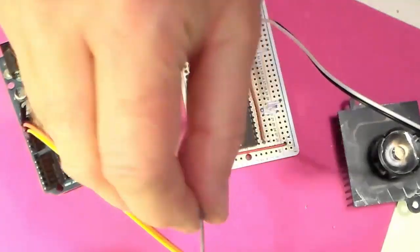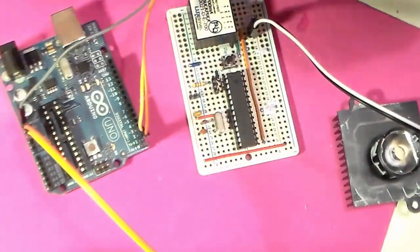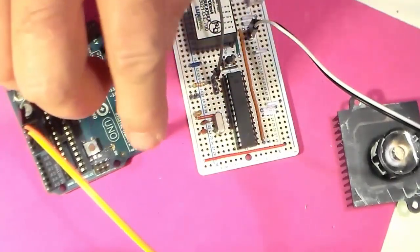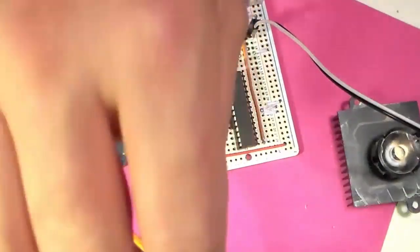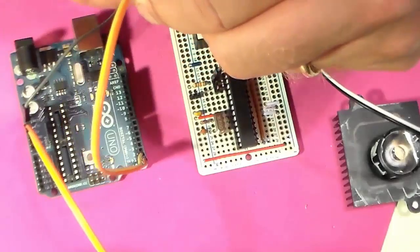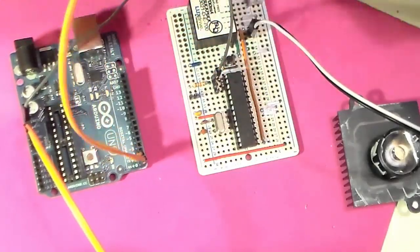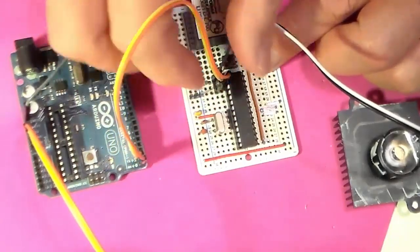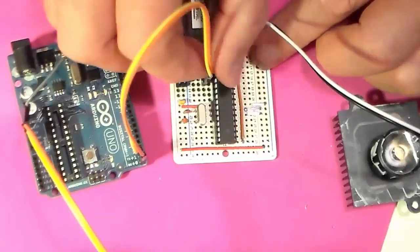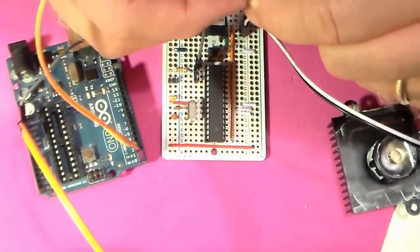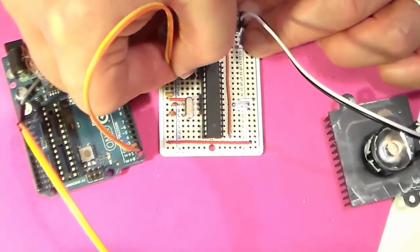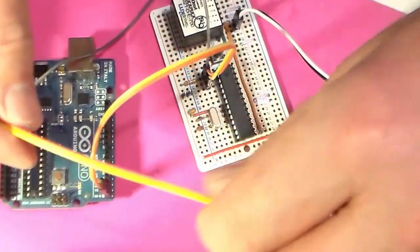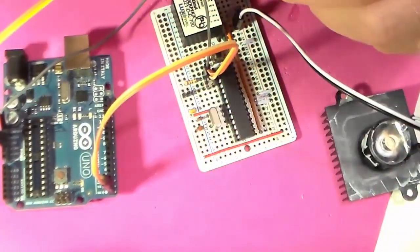The way this works is I run a lead from reset over here on the Arduino to pin one on my ATmega chip. Then from here where we have the RX and TX pins, I take those and hook them up to the RX and TX pins on my chip over here. These are pins one, two, and three all in order. Let me try again. I missed the middle one when I tried to put those on.